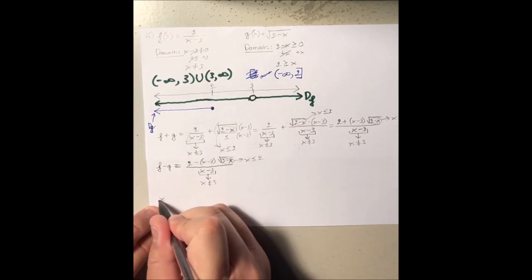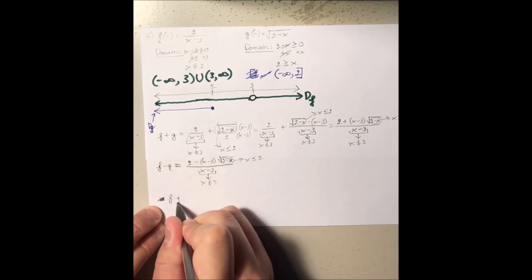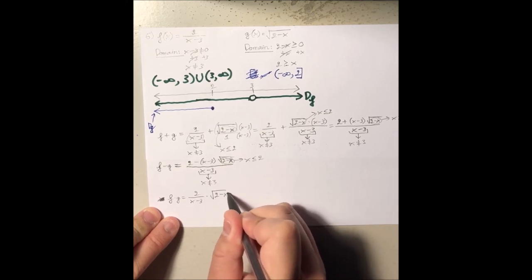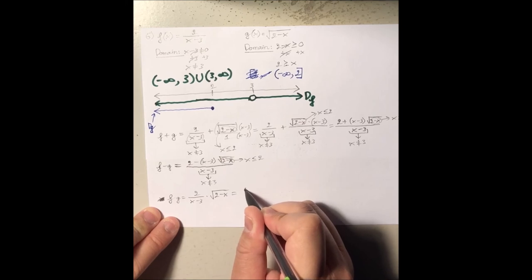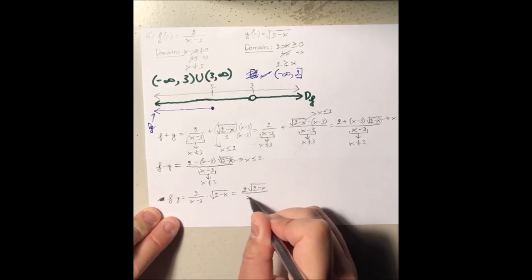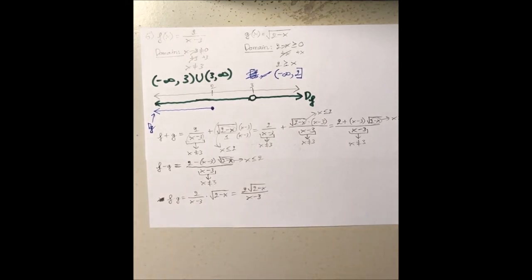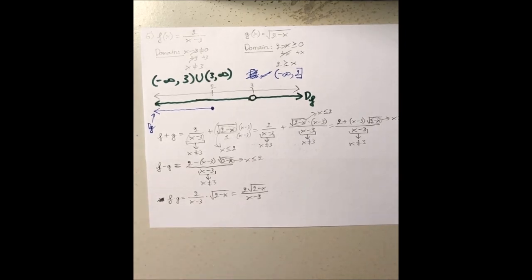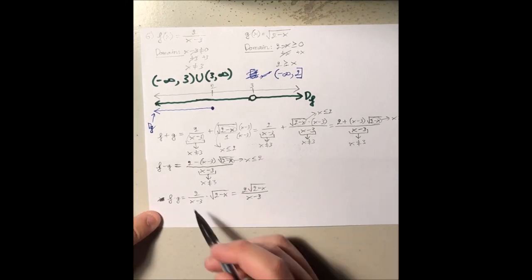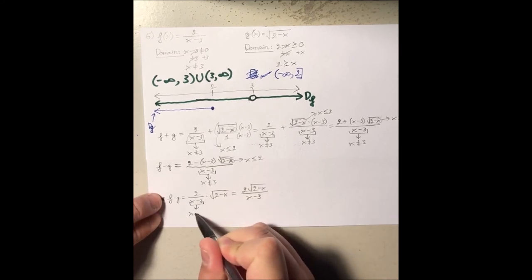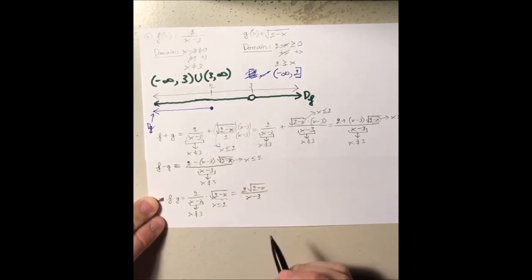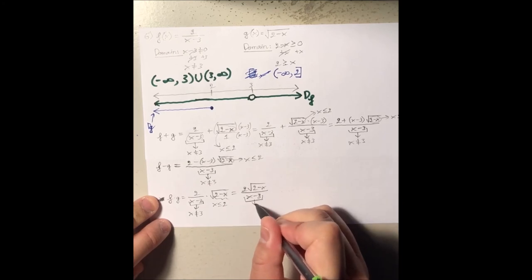For the product, it equals 2 over x minus 3 times square root of 2 minus x, which simplifies to 2 times square root of 2 minus x, all over x minus 3. The points of discontinuity at each step are the same: x cannot equal positive 3, and x must be less than or equal to 2.